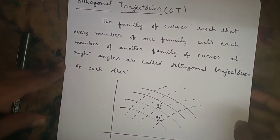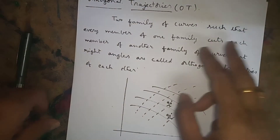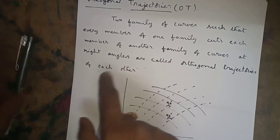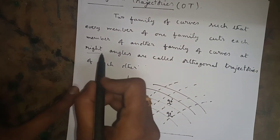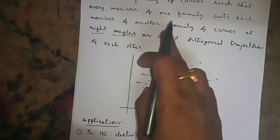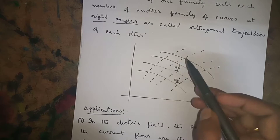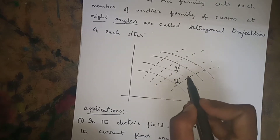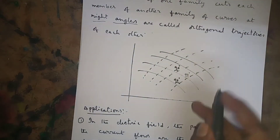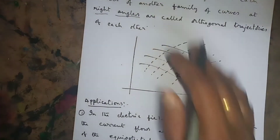What is the definition of orthogonal trajectories? Two families of curves — such that every member of one family cuts each member of another family of curves at right angles — are called orthogonal trajectories. Here in the diagram, each member of one family cuts another member at a right angle of 90 degrees.